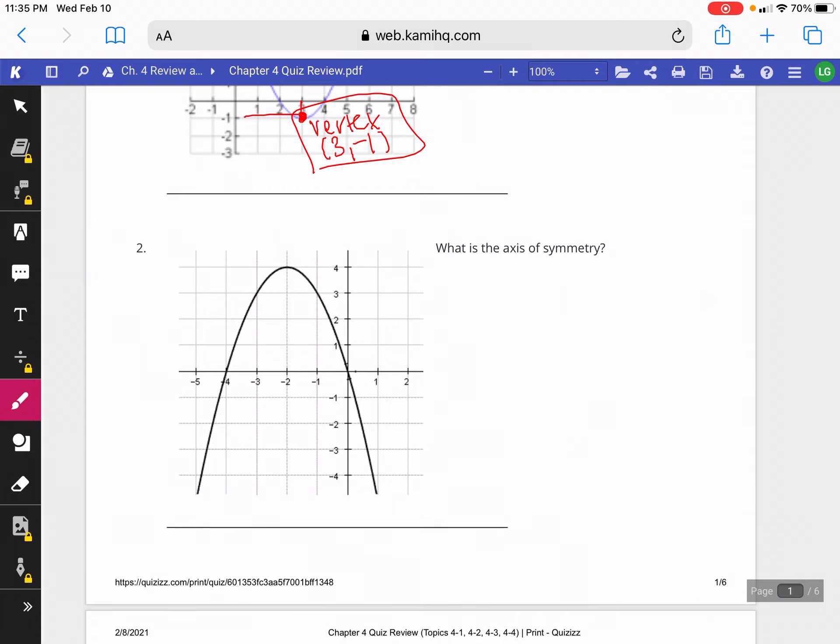This question wants to know the axis of symmetry. The axis of symmetry is the line that crosses through the middle of the parabola. It cuts through the vertex here and passes through the number -2, so our axis of symmetry is x = -2. For axis of symmetry, you have to write x equals because it's the equation of that vertical line that crosses through -2 on the x-axis. Every single point on that line will have a -2 for the x value.